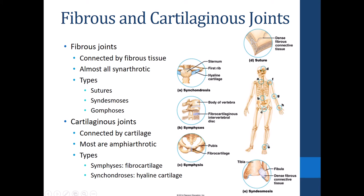Cartilaginous joints are — fittingly — composed of cartilage. Most cartilaginous joints are amphiarthrotic, meaning they have a little bit of give but still don't have a wide range of motion. There are two types: symphyses, which have fibrocartilage between the ends of the bones, and synchondroses, which have hyaline cartilage between the ends of the bones.